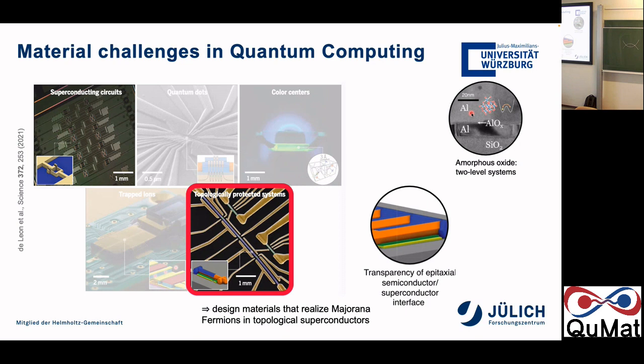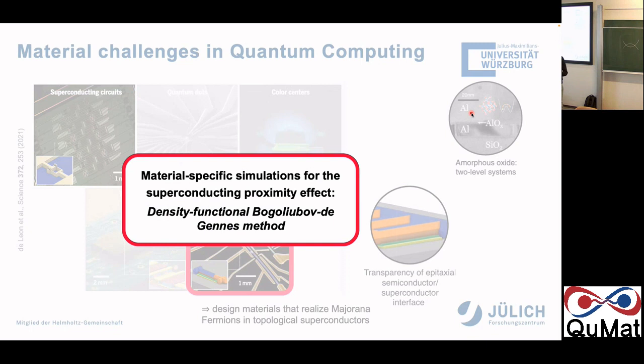To realize these topological superconductors, we also have to combine different materials. For example, you can take semiconductor nanowires and proximitize them with superconductors, or use topological insulators proximitized with superconductors. We also have different interfaces between different materials. We want to gain a better understanding from the microscopic point of view, from the electronic structure directly connected to the arrangement of atoms on the atomic scale. This is where our density functional theory method comes into play.